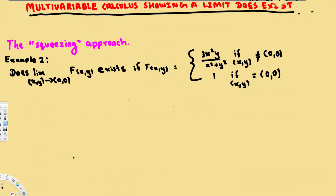In this video we are going to see an example of showing whether the limit exists or not for a multivariable function using the squeezing approach. We have two different sets of conditions, and from this we can say that limit as (x,y) approaches (0,0).